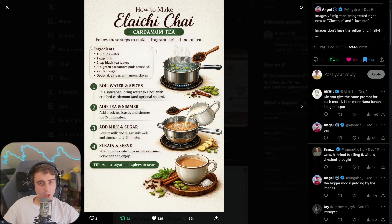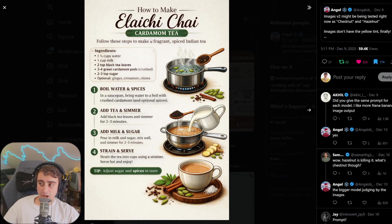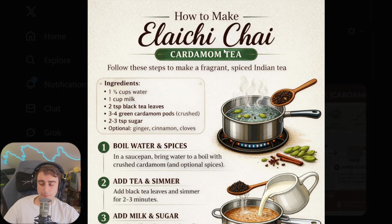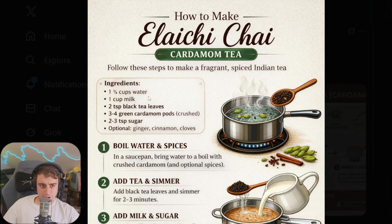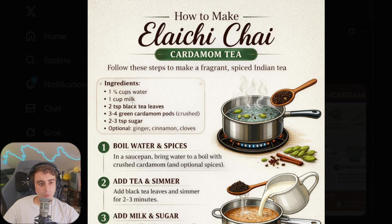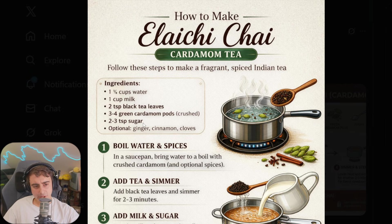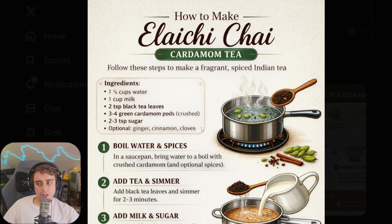Angel demonstrates a test prompt. We've got another diagram, this time a recipe on how to make a certain type of chai. Fragrant, spiced Indian tea. 1 and 1 over 0 cups of water. I assume that's supposed to be 1 over 2 cups of water, so a half cup. 1 cup milk. 2 tablespoon black tea leaves. 3 to 4 green cardamom pods crushed. I assume that comes from a plant. Little bit of sugar. Ginger, cinnamon, and cloves.